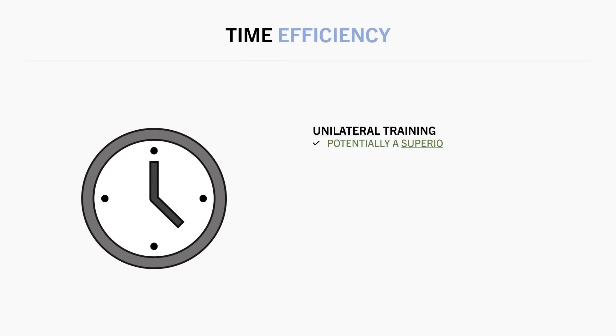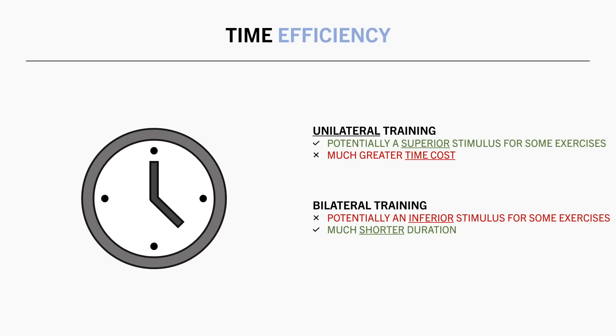Whereas bilateral training may sacrifice somewhat of a stimulus in some cases, although each set can be completed in a much faster time frame. Furthermore even if the hypertrophic stimulus is slightly inferior using bilateral exercises, the time saved can allow you to perform more sets of that exercise. So the net effect of unilateral training is usually going to have a negative impact on time efficiency compared with bilateral training in most cases, although if time is not an issue for you, you may still want to preference unilateral exercises if they provide you with a superior hypertrophy stimulus.